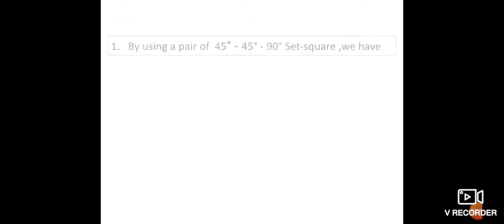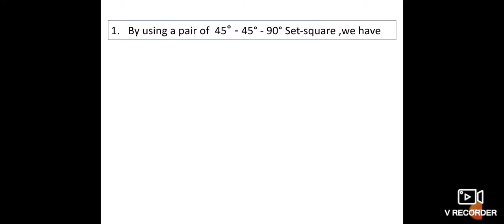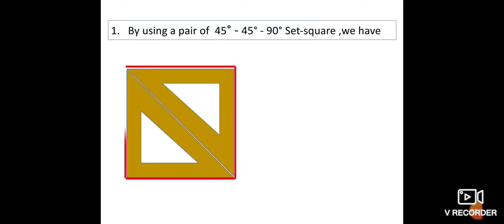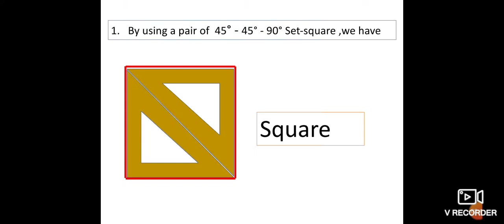Next, by using a pair of 45°-45°-90° set squares, we get this figure. All four sides are equal, and all the angles are equal. It is a square.